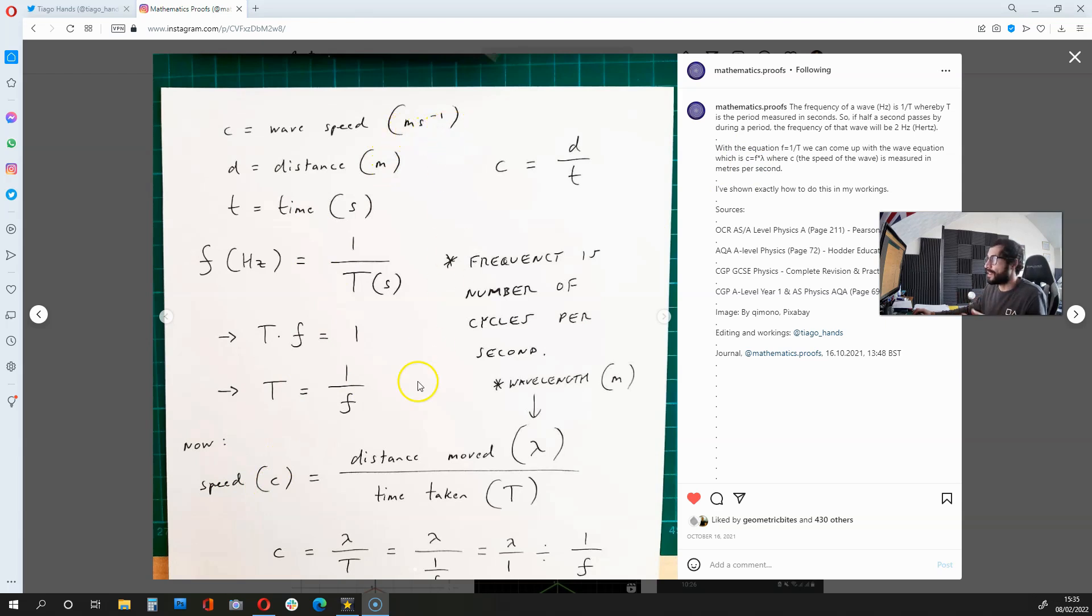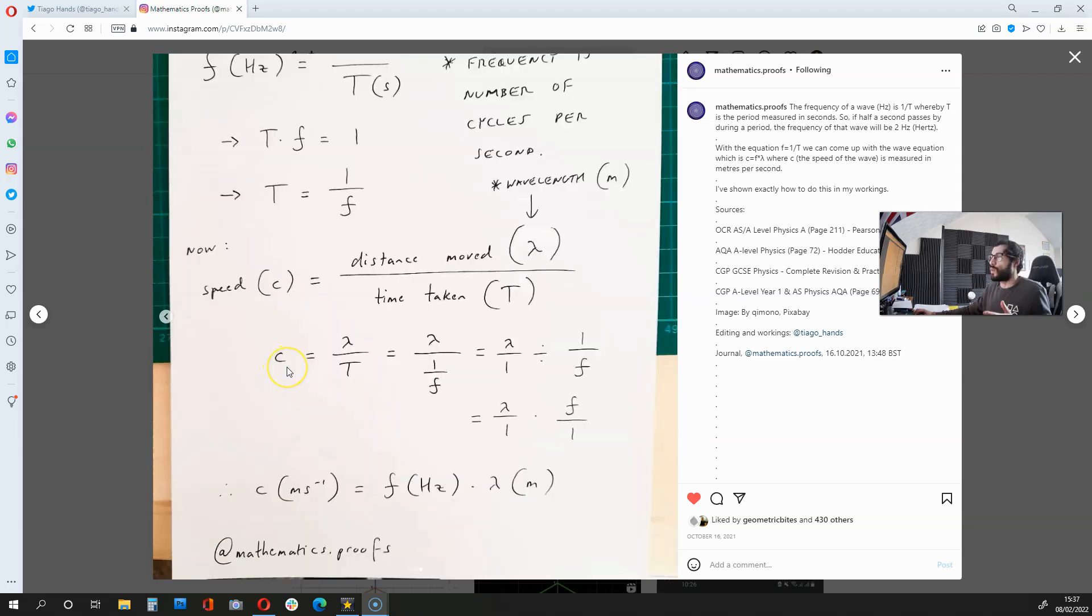Now, let's say that the wave speed, measured in meters per second, is equal to distance moved, represented by lambda, which is the wavelength in meters, over time taken, which is measured in seconds. What this gives us is c equals lambda over t.